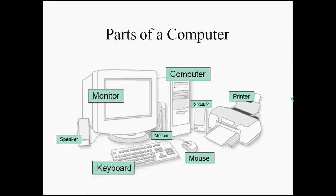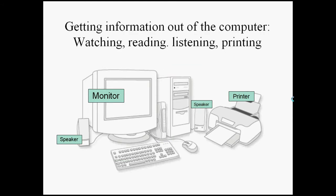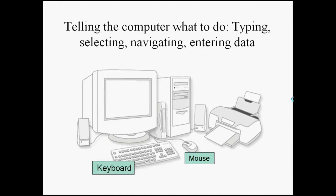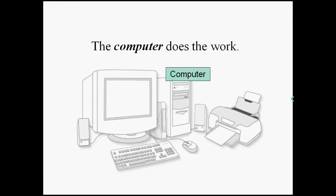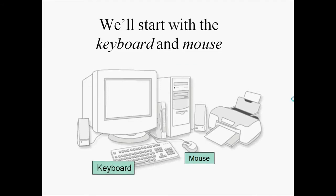These are all the parts put together. You can think of the monitor, the speaker, and the printer as three different ways to get information out of the computer — by watching, reading, listening, and printing. There are only two ways to get information into the computer immediately: the keyboard and the mouse. But the computer is what does the work.